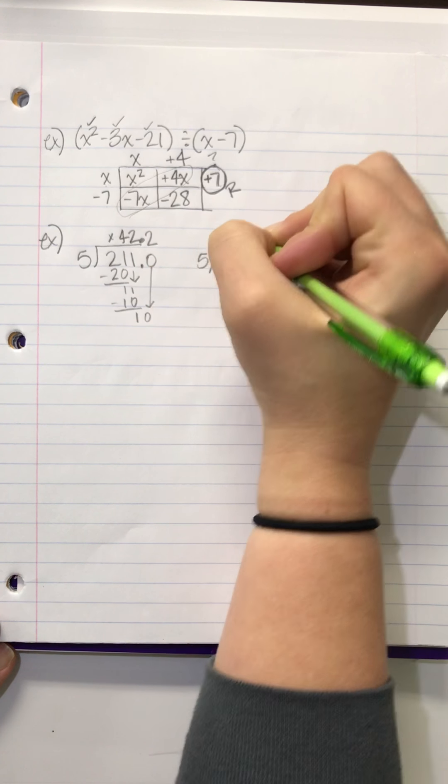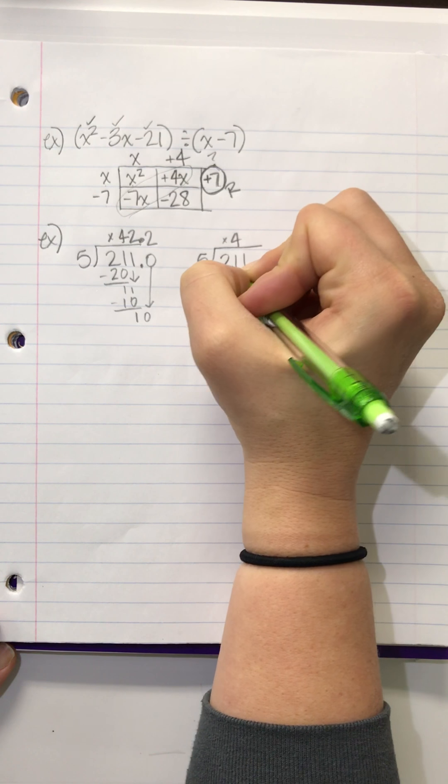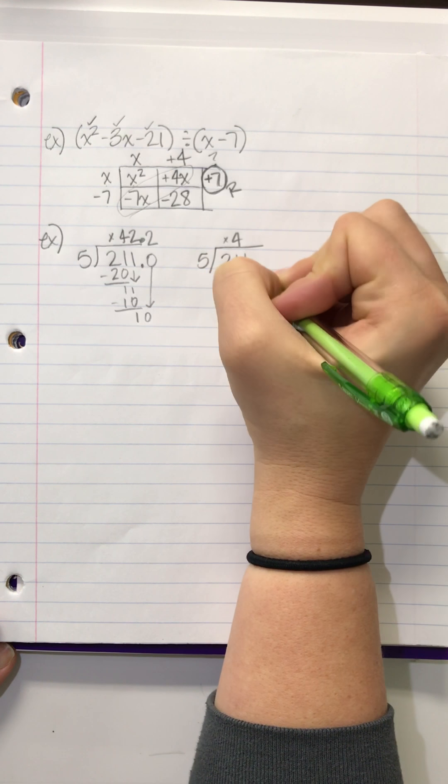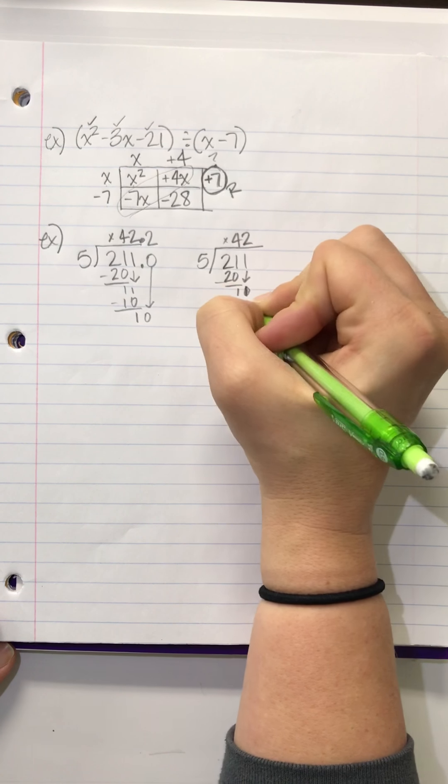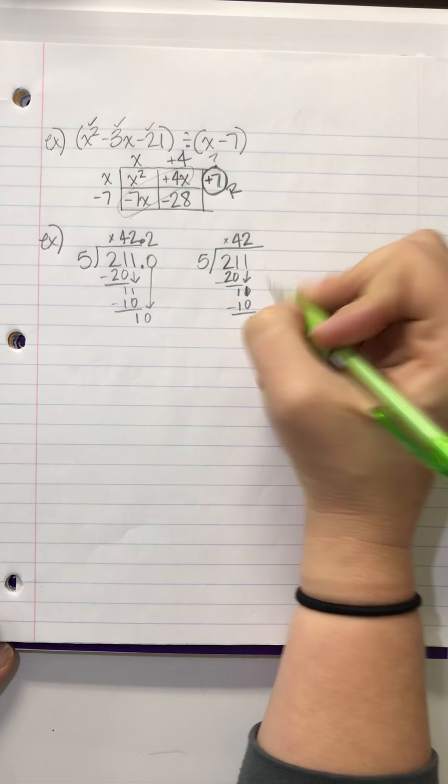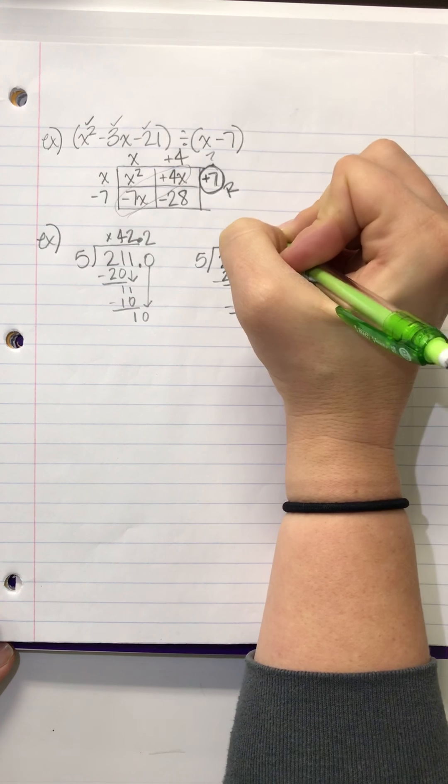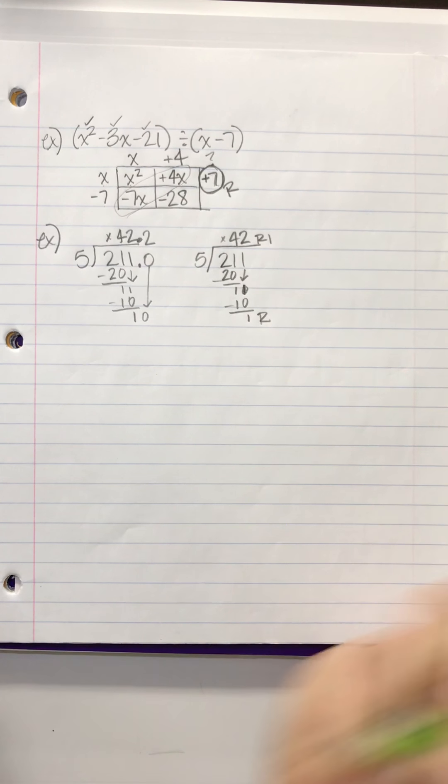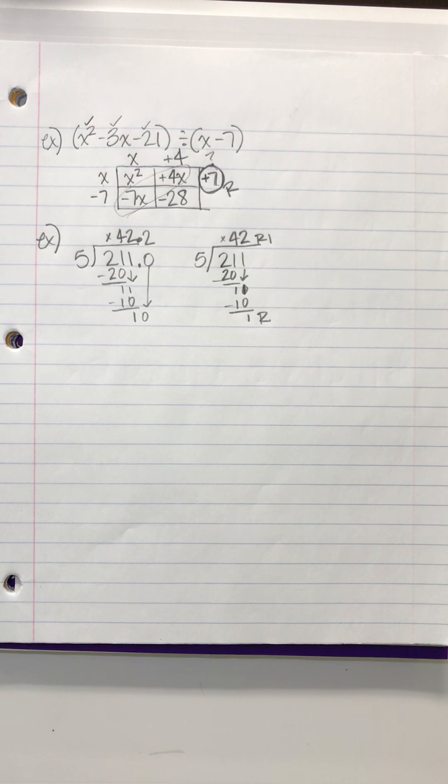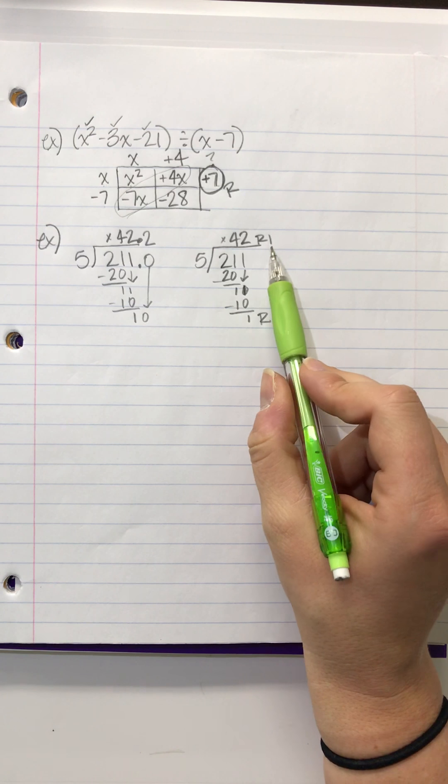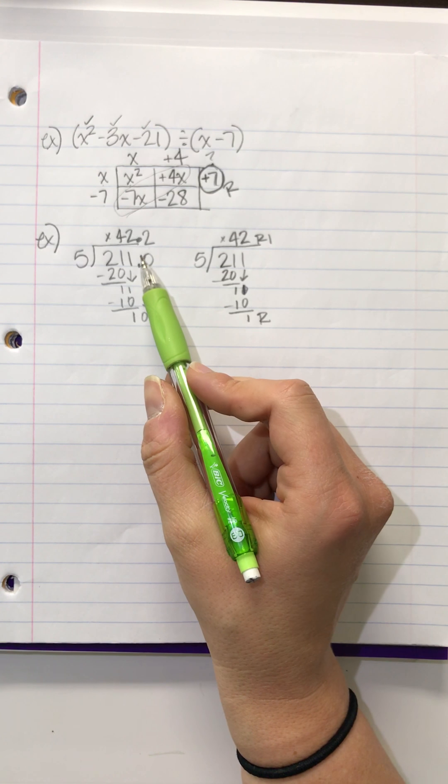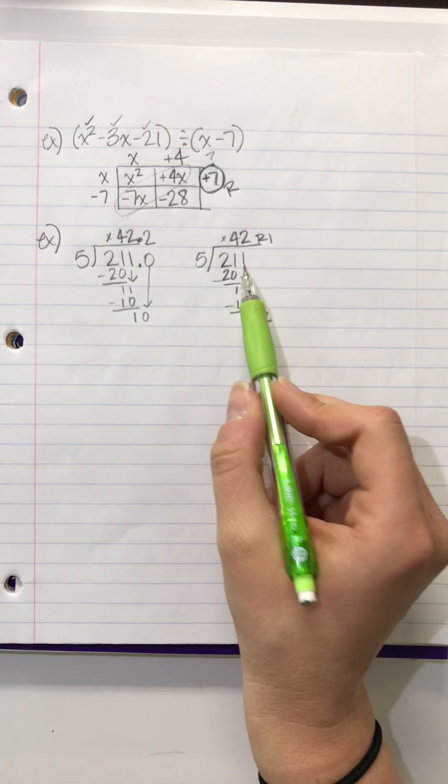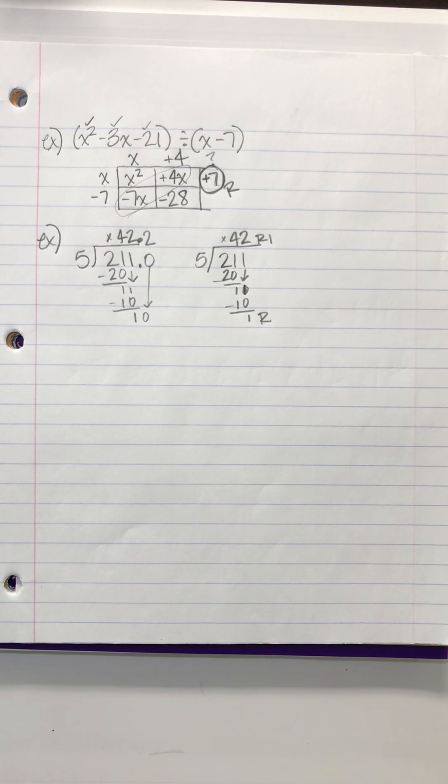Before you learned how to do that, when you divided by 5, you said, okay, there's 4, and there's 1 left over, and then it goes in there twice, and there's 1 left over, and you said, oh, it's a remainder of 1. So, 42, remainder 1. Does anybody see a connection between a remainder of 1 becoming a 0.2? Because these are both answers to the same question. What's the connection, Alex?